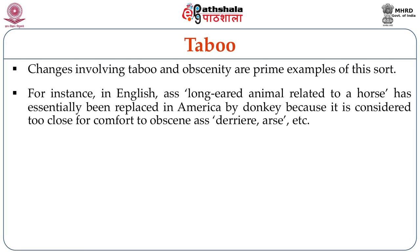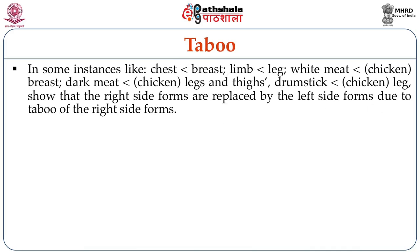Changes involving taboo and obscenity are prime examples of lexical replacement. In English, the long-eared animal related to a horse has essentially been replaced in America by 'donkey' because the original word is considered too close for comfort to an obscene term. In some instances, 'chest' — so close to another name for breast — 'limb' for 'leg,' 'white meat' for chicken breast, 'dark meat' for chicken legs and thighs, and 'drumstick' for chicken legs show that right-side forms are replaced by left-side forms due to taboo.